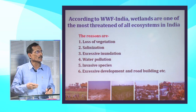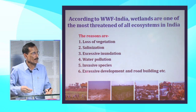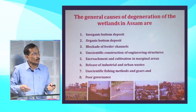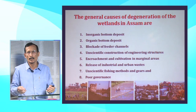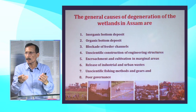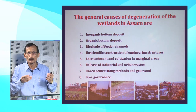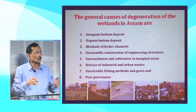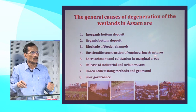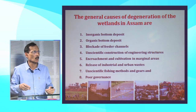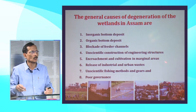According to WWF India, wetlands in India have been deteriorated due to loss of vegetation, salinization, excessive inundation, water pollution, invasive species, and excessive development of roads and buildings. In Assam specifically, the causes include inorganic bottom deposits — sediments carried by rivers due to deforestation — organic bottom deposits from decomposed water hyacinth and other plants, blockage of feeder channels, unscientific construction of engineering structures like roads, railway lines, and embankments, encroachment for infrastructure development and cultivation in marginal areas.